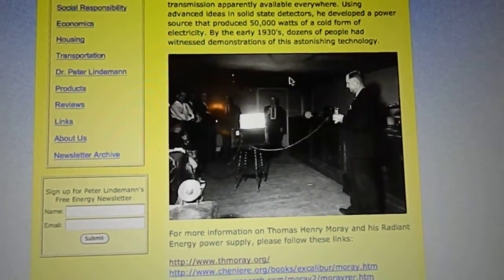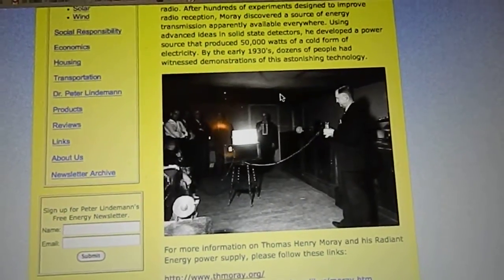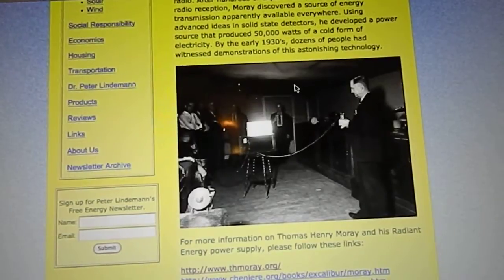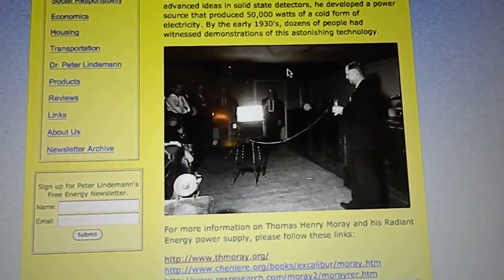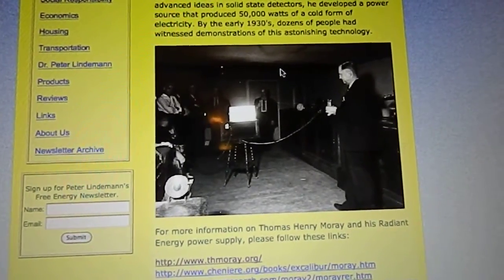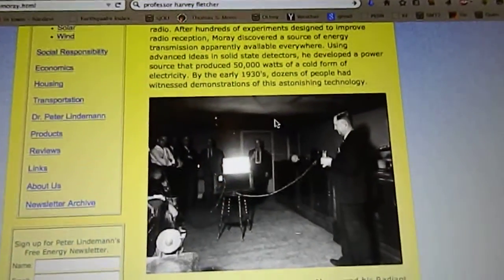Hello everyone. This photograph is Thomas Henry Moray demonstrating his energy device. Very interesting - he had no battery attached to this, no grid connection, and yet this would produce power for hours, enough to light - well, it says here 50,000 watts.